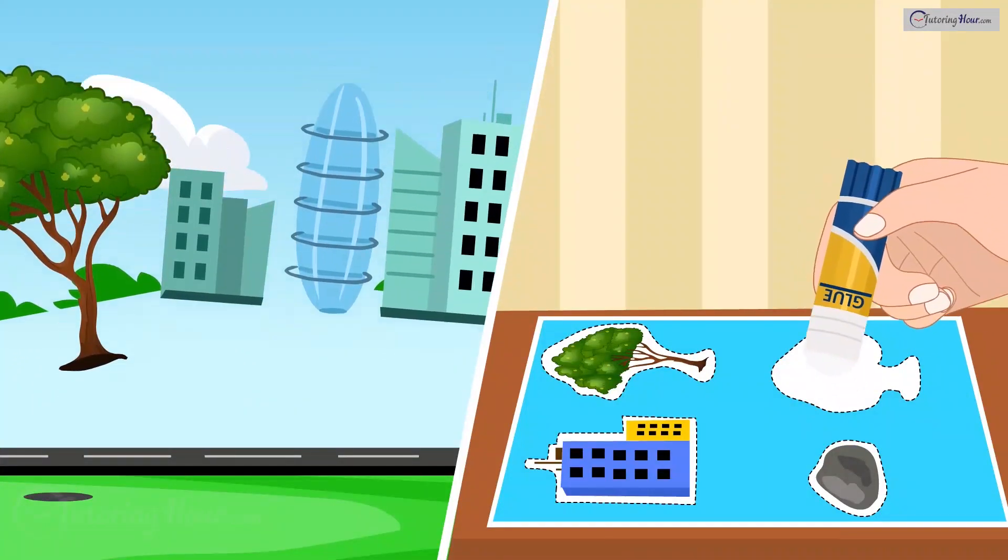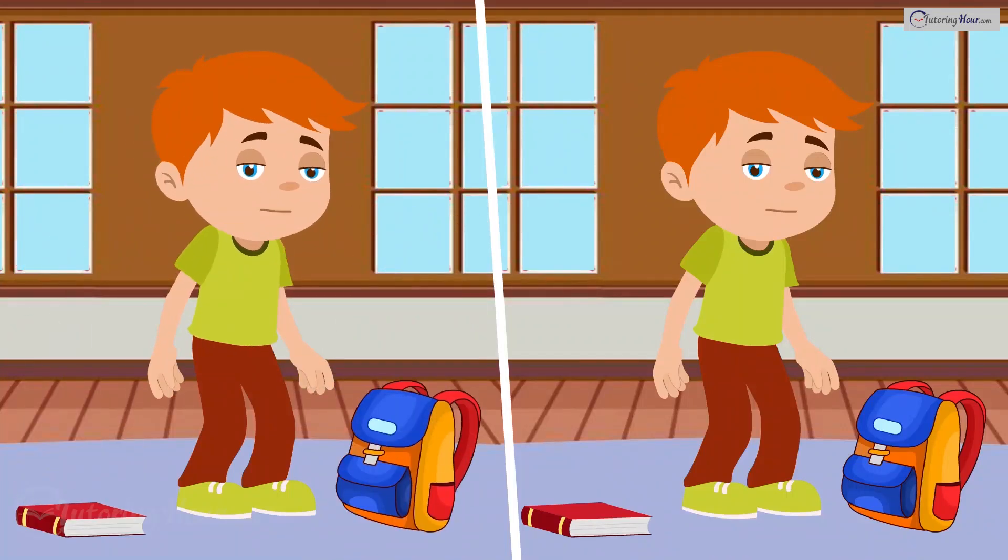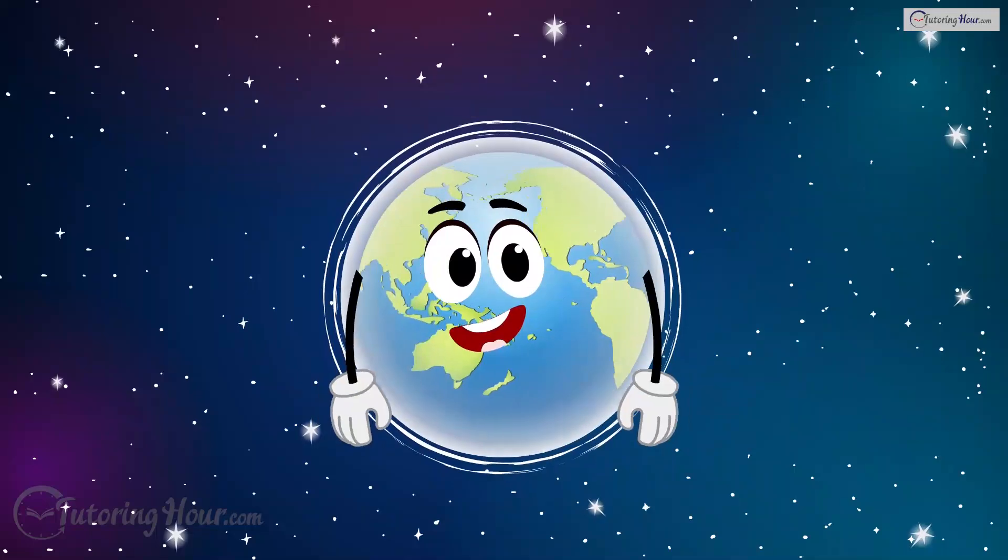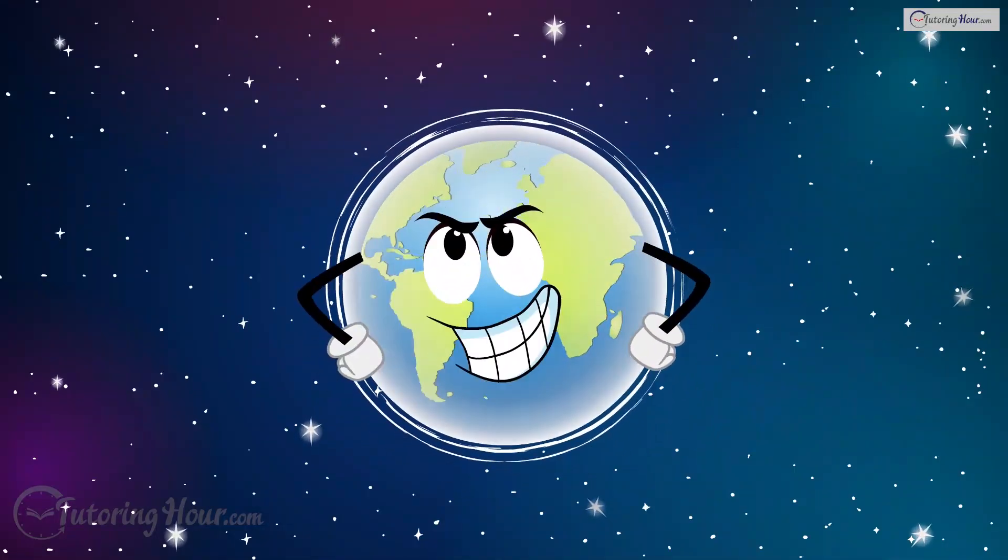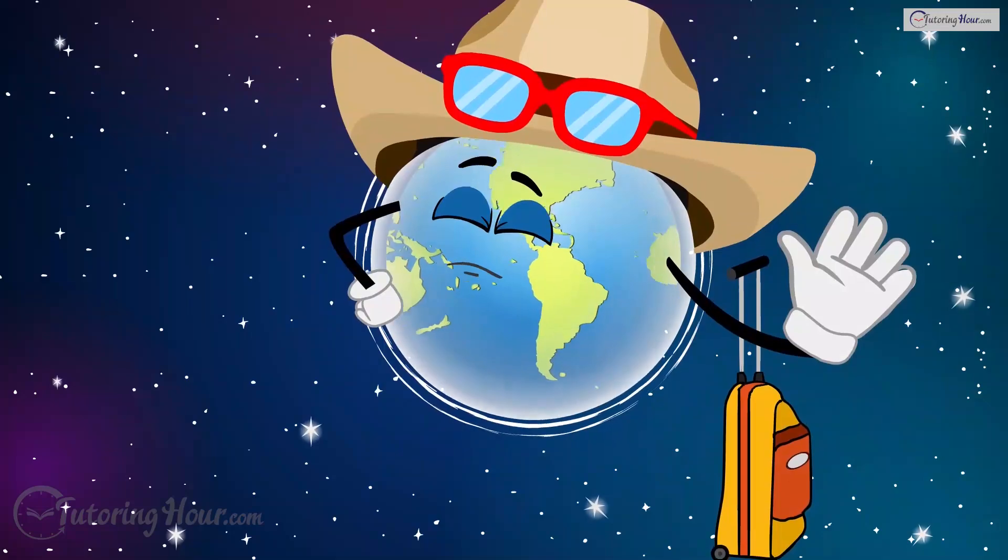Gravity is the invisible glue that keeps everything anchored. It's why when you drop your book or backpack, it falls instead of flying off into space. Now imagine, out of the blue, gravity decides to prank us. Boom. Suddenly, gravity is like, nah, I'm on vacation.